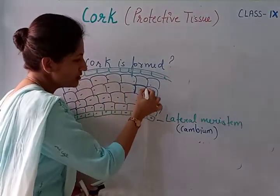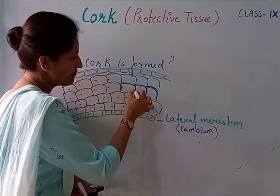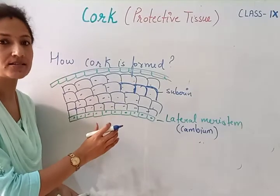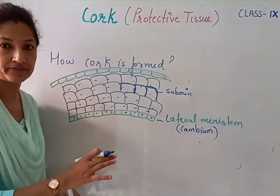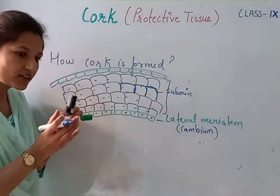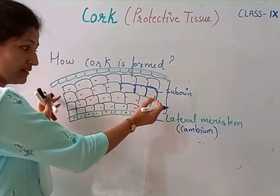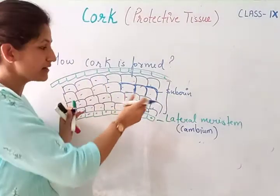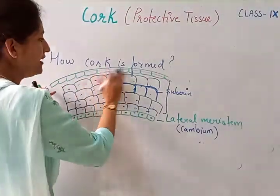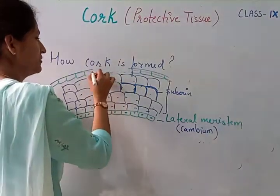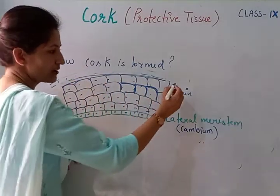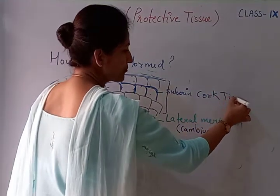Then deposition of suberin starts — that deposition of suberin in the cell wall makes the cells suberized. This deposition in the cell wall makes them dead and inactive. Now this complete part, when it is compactly arranged, the inner layers are going to put pressure on the outer layers. They are going to create pressure and these epidermis cells are going to get ruptured. This complete part gets ruptured, and what is now externally present — this is the cork.